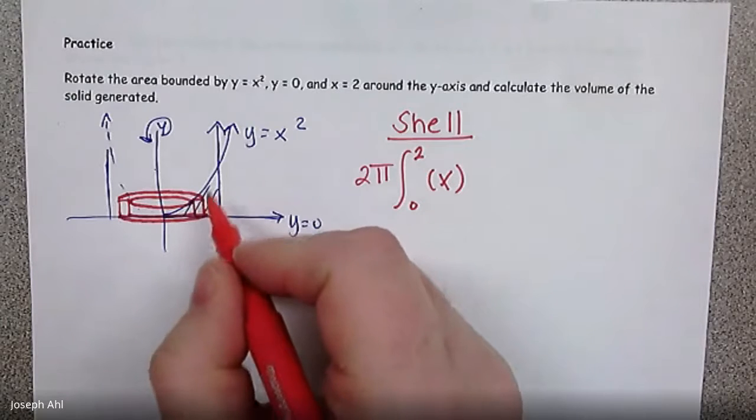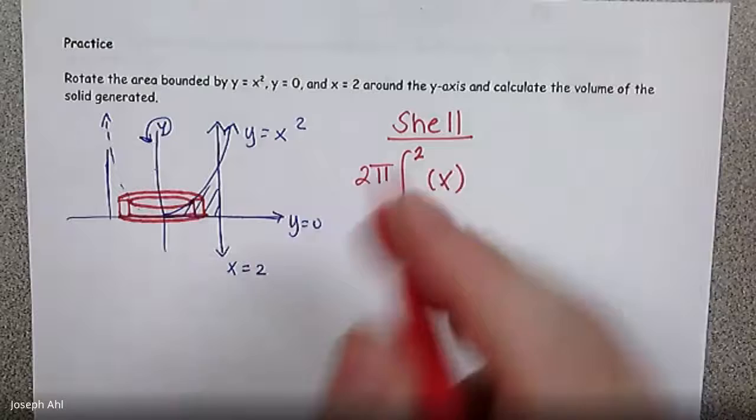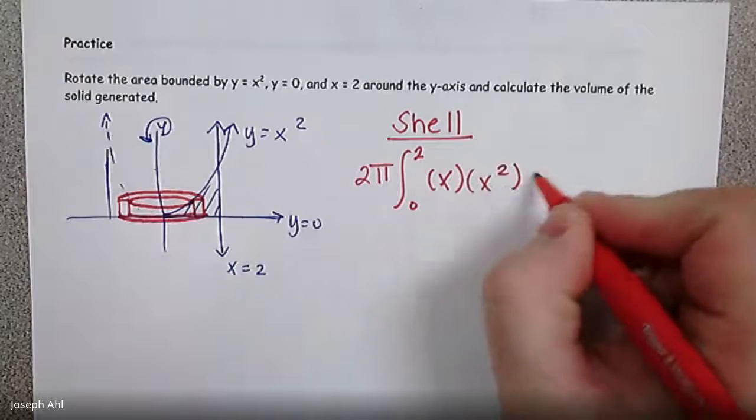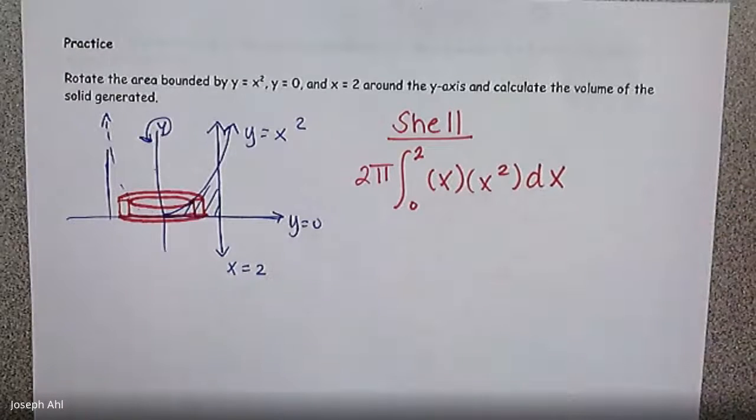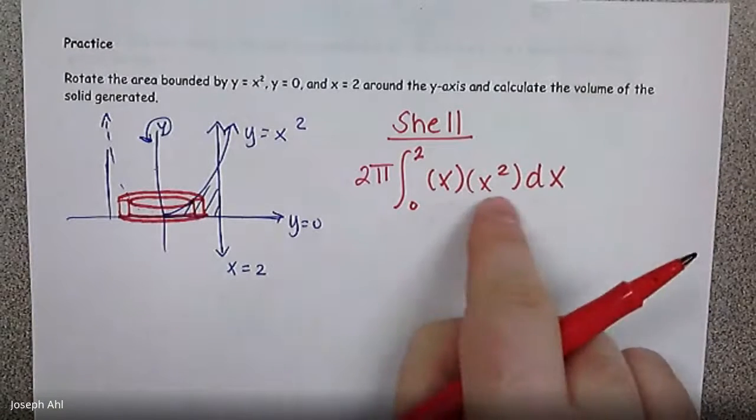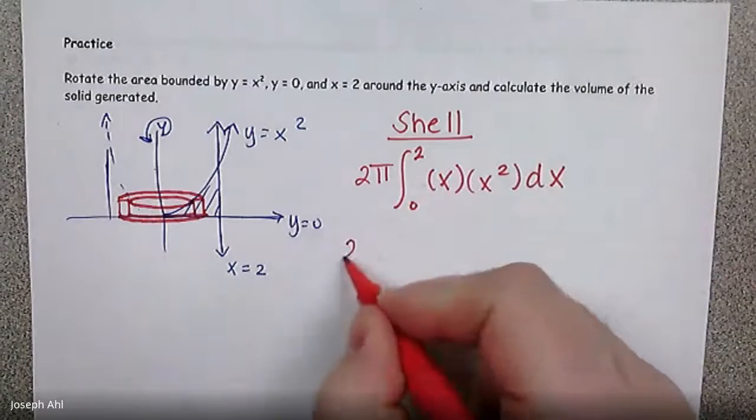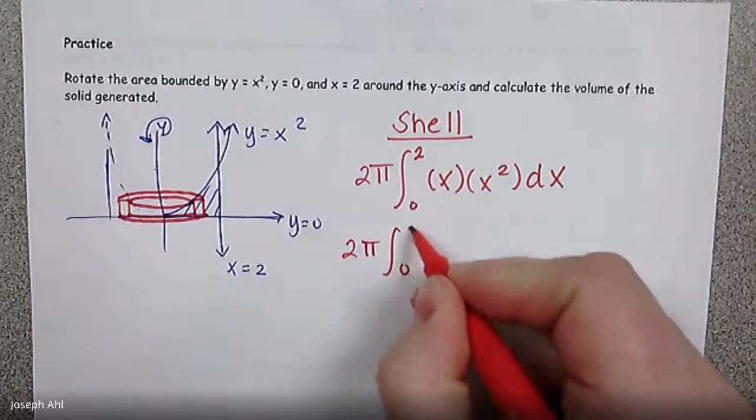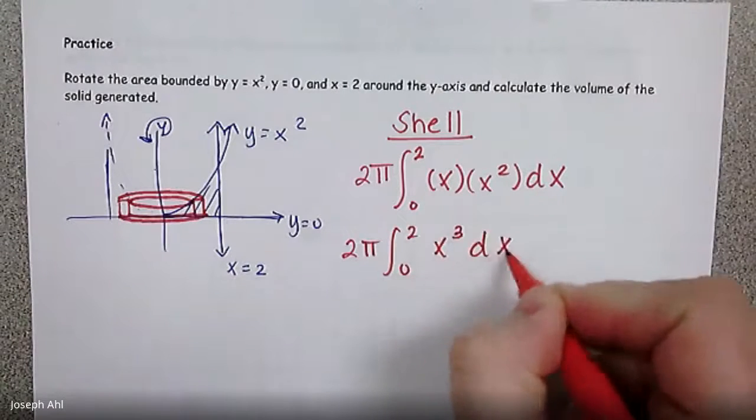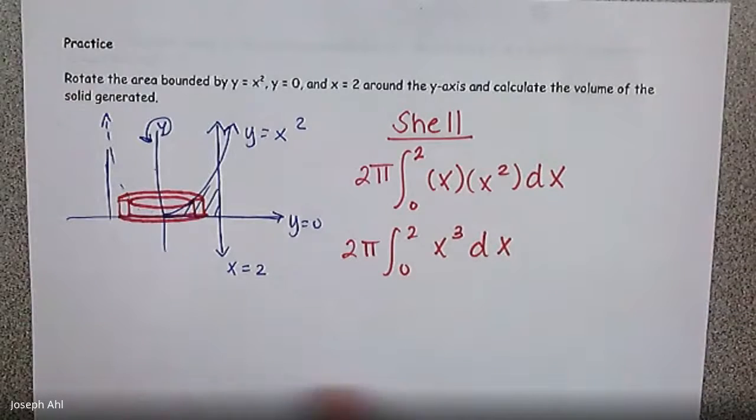So the radius is x, and then from there we need the height. Well, the height of all these shells is just going to be the height along the function y equals x squared. So it's going to be times x squared dx. And once you write down and you've decided what the radius and height are, look how simple this expression is going to become to integrate. It's just the integral from 0 to 2 of x cubed dx.